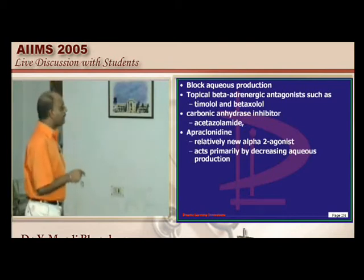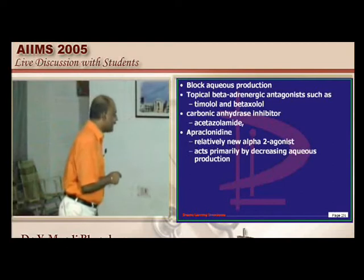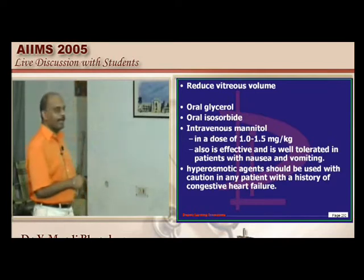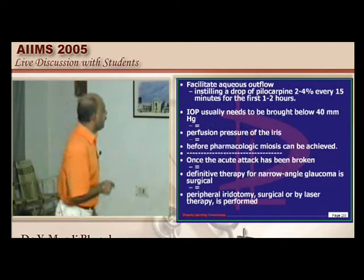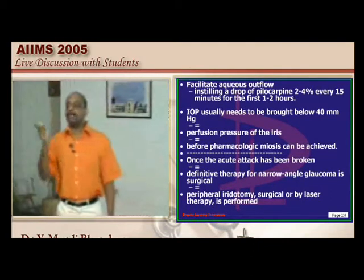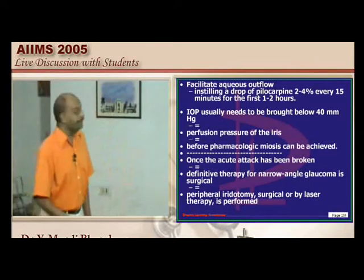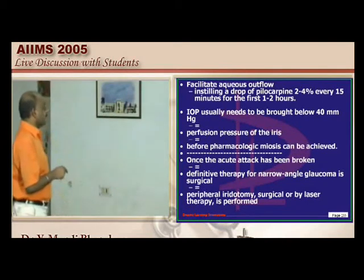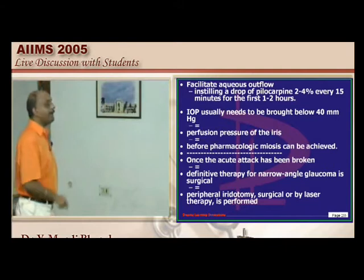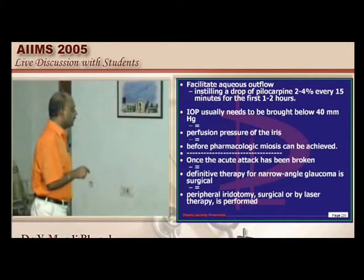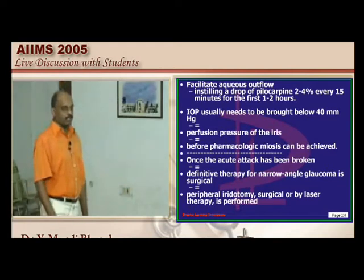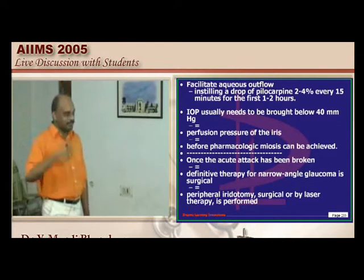To facilitate aqueous outflow, use a miotic like pilocarpine — but this is only the third step, not the first. Pilocarpine is not the first step because intraocular pressure must first be brought down to about 40 mmHg before pharmacological miosis is induced. Once the acute attack is controlled, peripheral iridotomy has a role. The final answer is IV mannitol. Atropine is dangerous as it causes pupillary dilatation, worsening the situation.